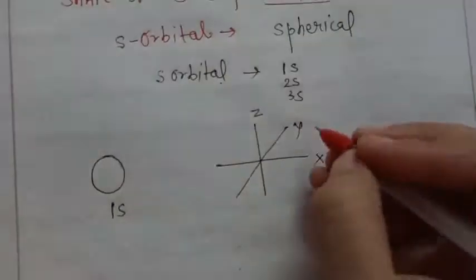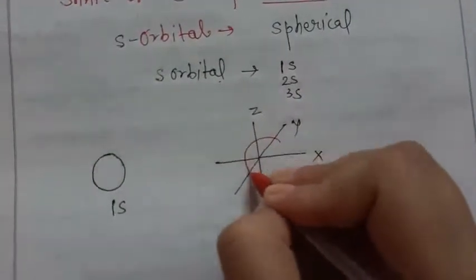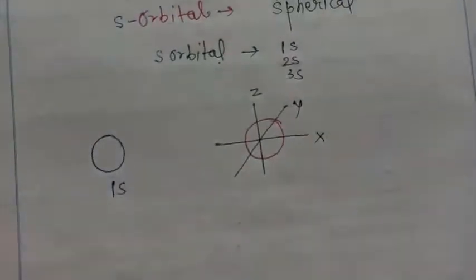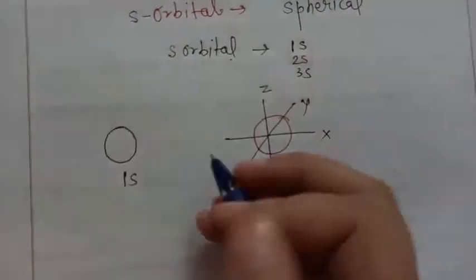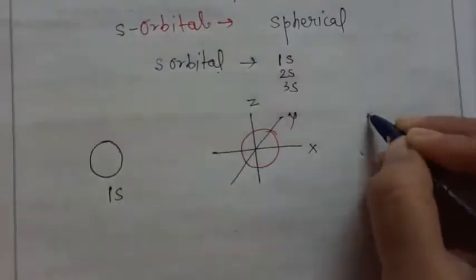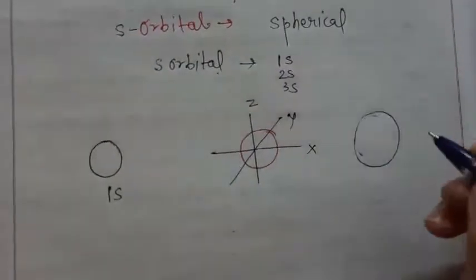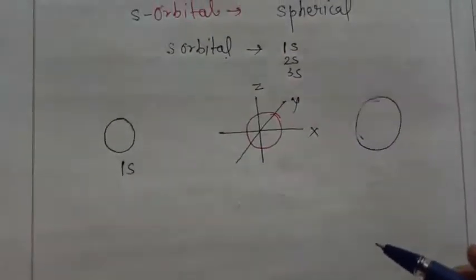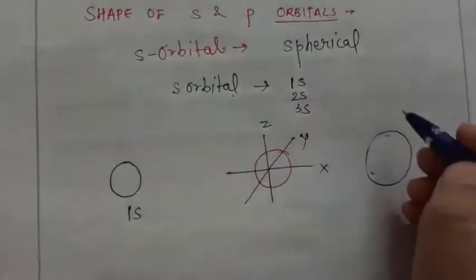This is actually spherical in shape like this. Supposingly this is 1s. If somebody tells us to draw 2s, then 2s will be spherical but size will be bigger. Similarly, 3s will be spherical but size of S orbital increases, and so on.